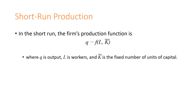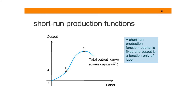The production function in the short run states that output is a function of labor and capital, where K-bar represents a fixed number of units of capital. Recall that in the short run, there always has to be one fixed variable of input. In this case, it is capital that cannot be changed, while labor and quantity are variables. To sum up, output is a function of labor and a fixed amount of capital.